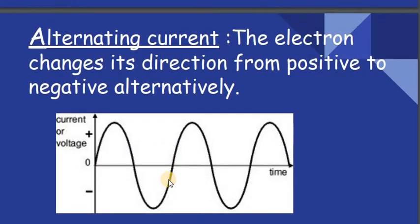In alternating current, the electron changes its direction from positive to negative alternatively. This is the waveform where the electron changes direction from positive to negative alternatively.